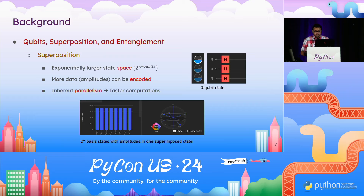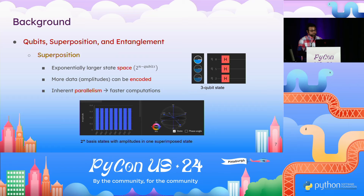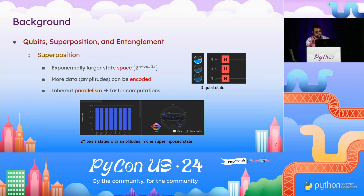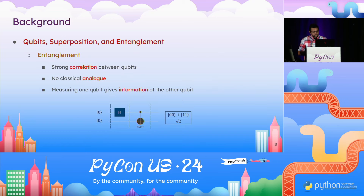With multiple qubits together, the state space grows exponentially. Three qubits will have eight basis states, and more data can be encoded as the amplitudes of that quantum state. This gives rise to inherent parallelism — you can operate gates on all eight states in superposition together, which leads to faster convergence to the solution. Superposition is one of the interesting properties.